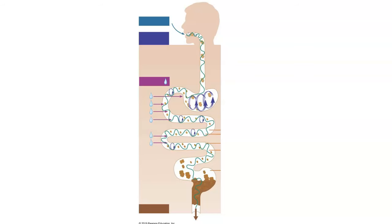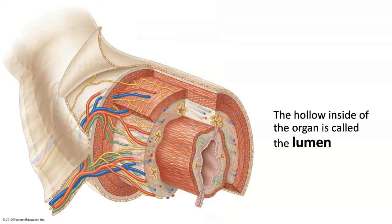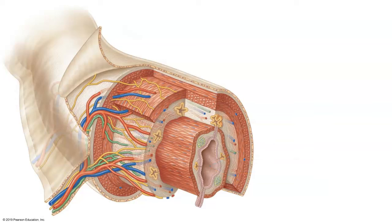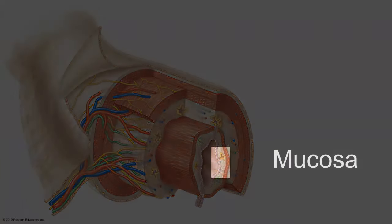If you take a look at the GI tract from the esophagus through the large intestine, it basically has the same composition. The hollow inside, where the food and secretions occupy, that hollow space is called the lumen. And then the wall of the GI tract has four parts.